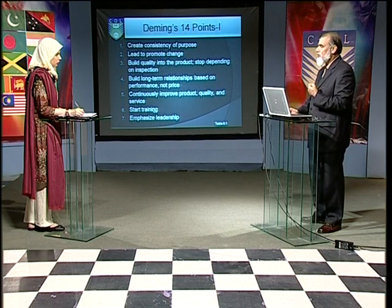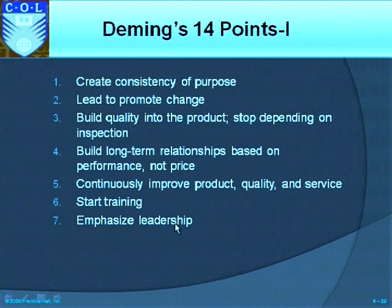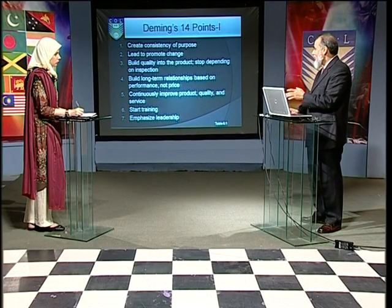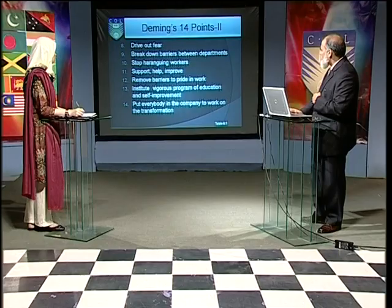Deming's fifth point is to continuously improve product quality and service. Quality is not a one-shot operation — it is a continuous process from procurement all the way to delivery, and even after a product is produced or a service is delivered. The sixth point is to start training — without training you cannot build a good product or deliver a good service. The seventh point is to emphasize leadership at every level of design, manufacturing, and sales.